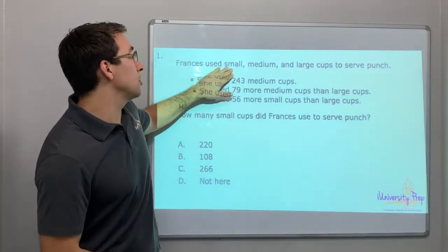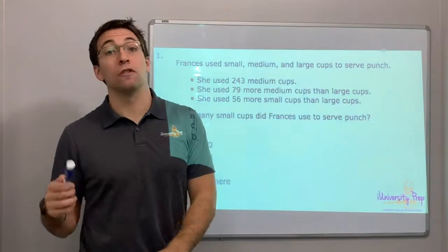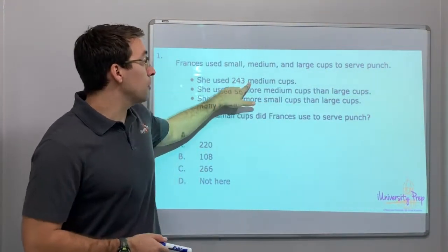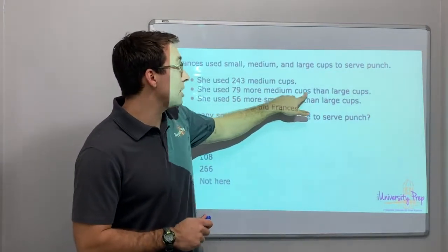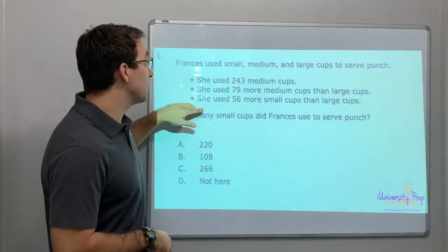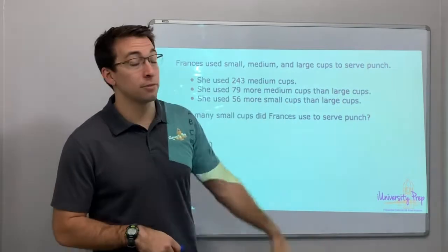Frances used small, medium, and large cups to serve punch. She used 243 medium cups. She used 79 more medium cups than large cups, and she used 56 more small cups than large cups.